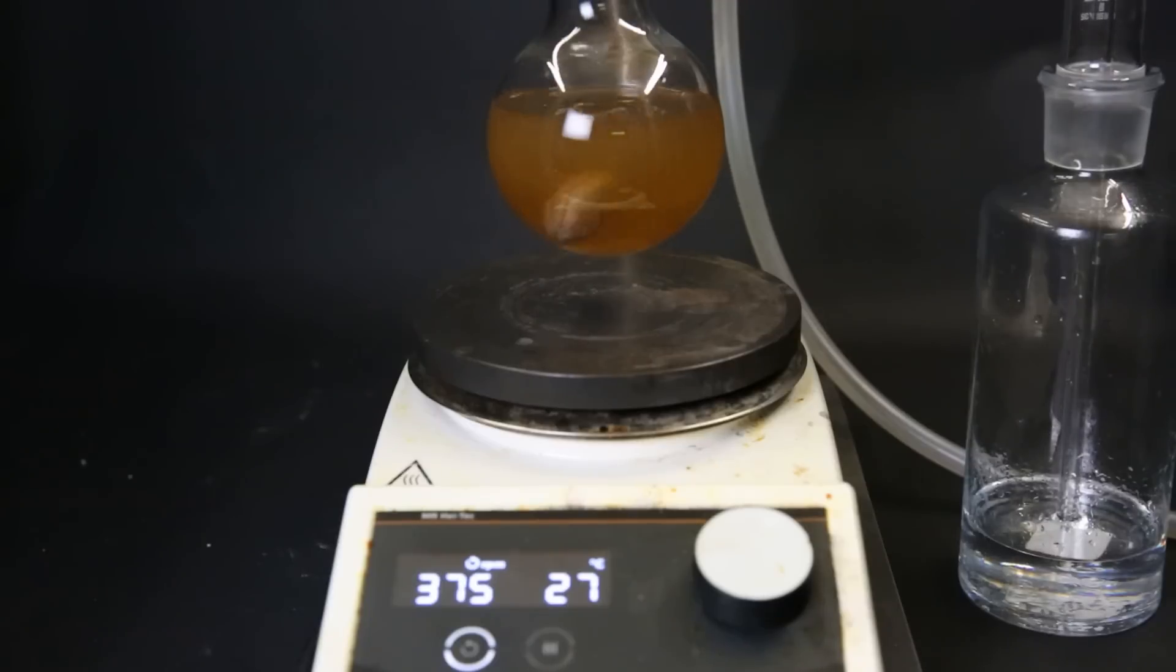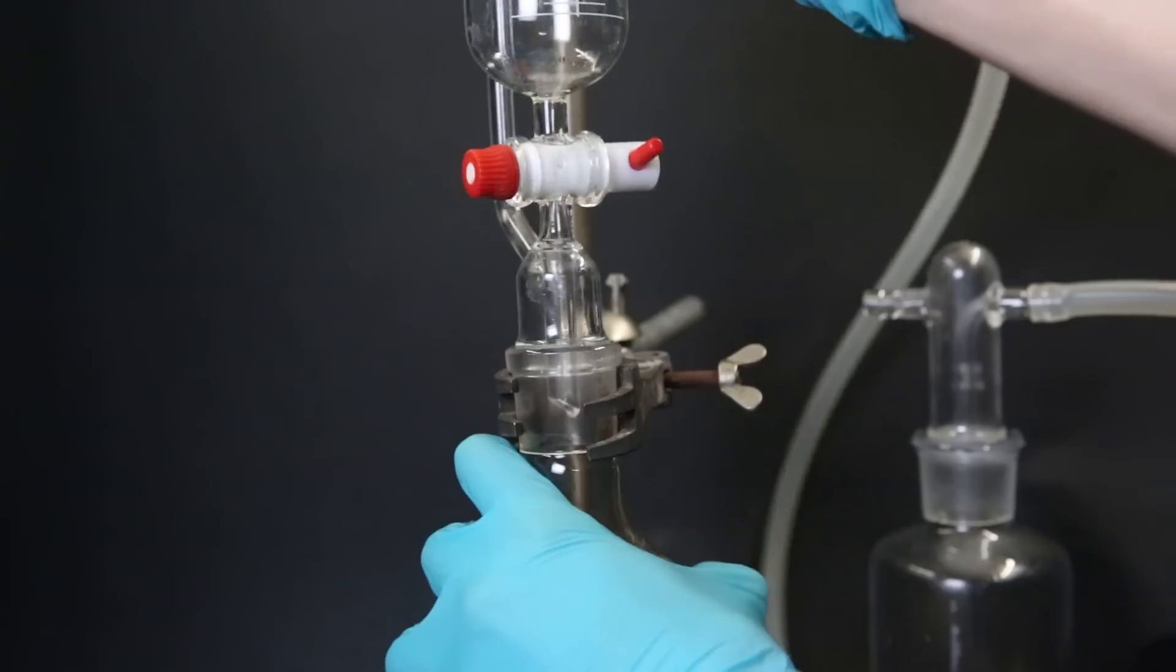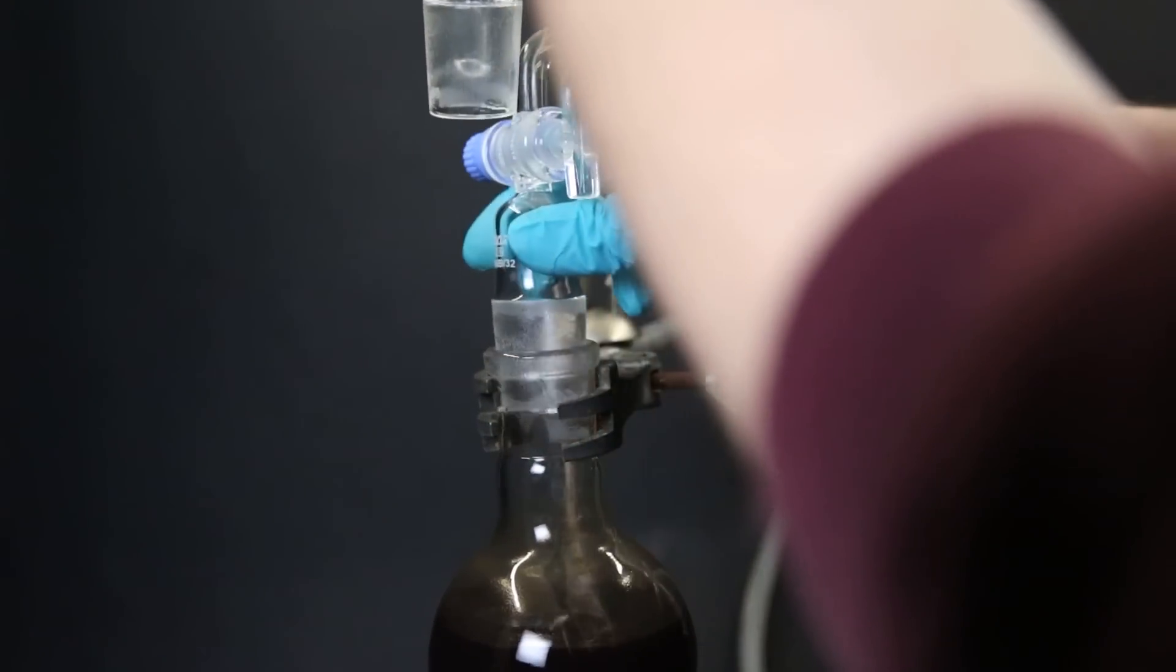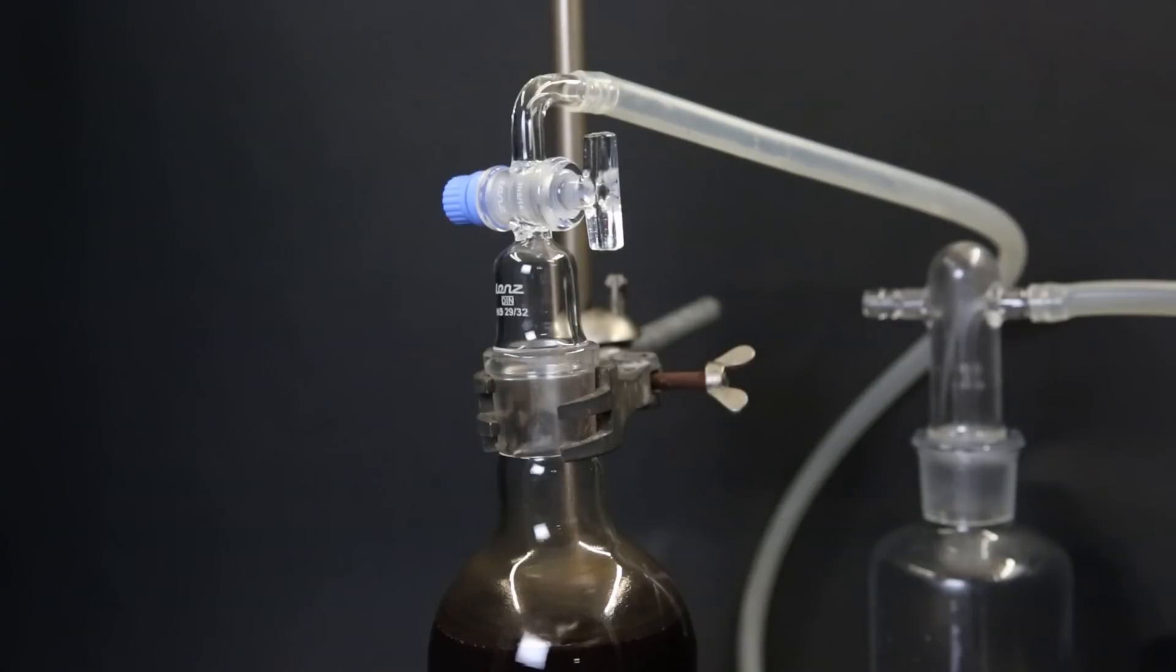Since the surface area of the sodium pieces is quite small, it will take a while for the reaction to complete. After all of the cyclopentadiene is added, I remove the dropping funnel and connect the flask directly to the gas washing bottle. I then let it react until no more hydrogen is produced and all of the sodium is gone.